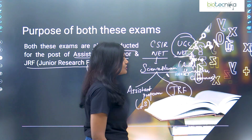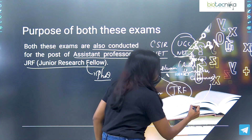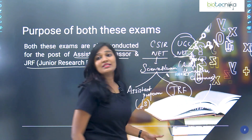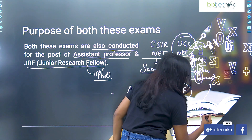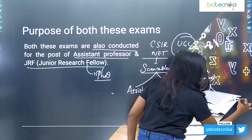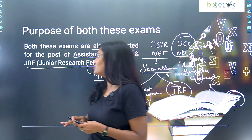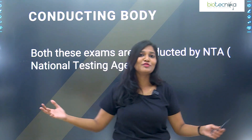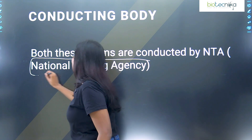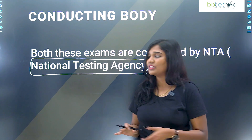In UGC NET, the same case applies but the funding body is University Grants Commission. They can also become assistant professors in UGC colleges and universities, and they can also become a JRF under the UGC governing body, where they will also get a stipend. NTA is the conducting body which actually conducts examinations for both UGC NET as well as CSIR NET.